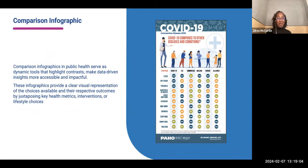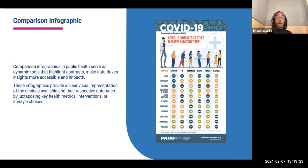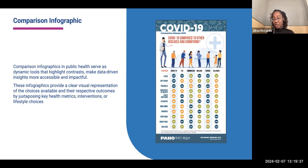First we have comparison infographics. These serve as a tool to highlight contrast and make data-driven insights more accessible and impactful. They provide clear representation of all choices available and their respective outcomes, and compare them to other key metrics, interventions, or lifestyle choices. For example, we're comparing symptoms of COVID-19 to the flu, the common cold, malaria, and allergies.